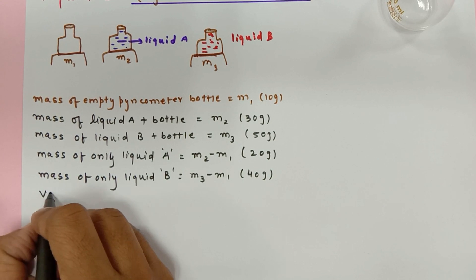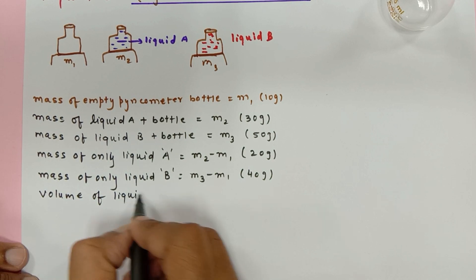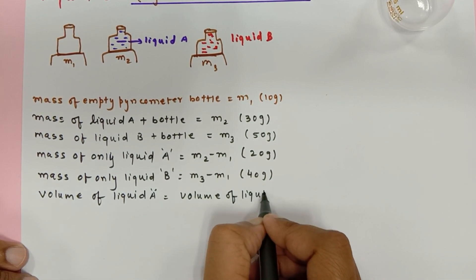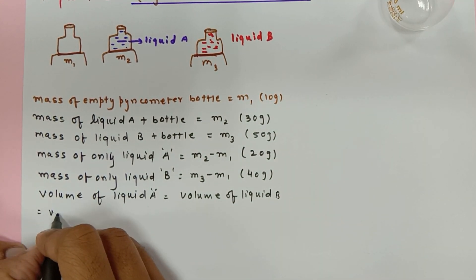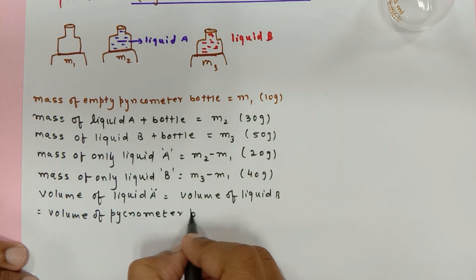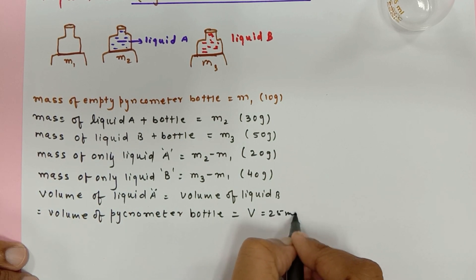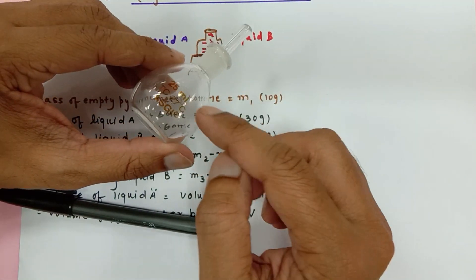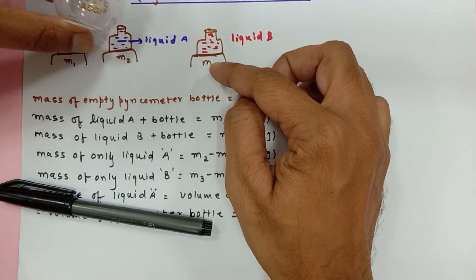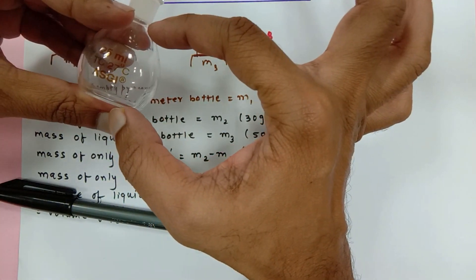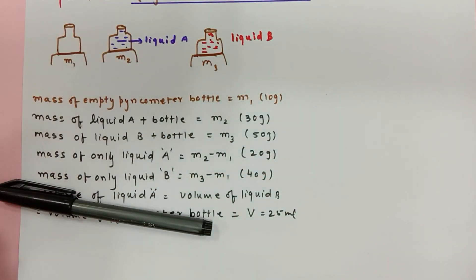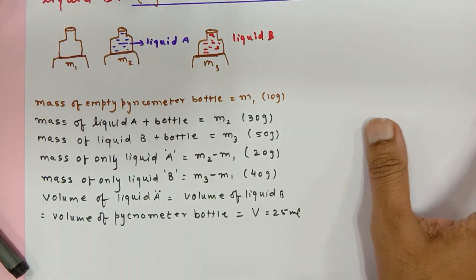Most importantly, the volume of liquid A is the same as the volume of liquid B, and that is the same as the volume of the pycnometer bottle — that is V, which is 25 ml as written on it. If you completely fill the bottle with any liquid, it holds 25 ml. So the volume of liquid A and the volume of liquid B are both 25 ml.